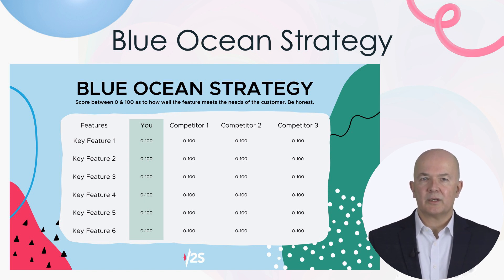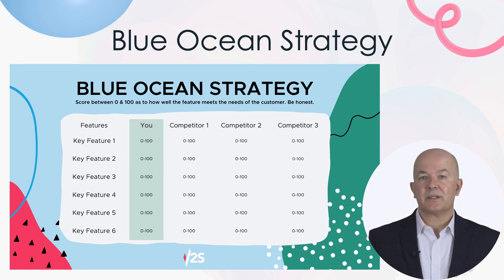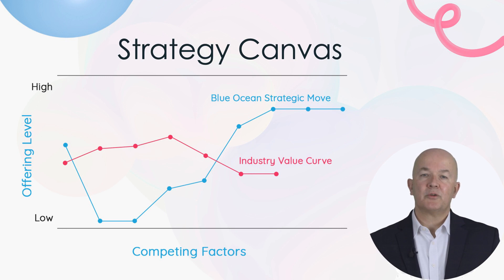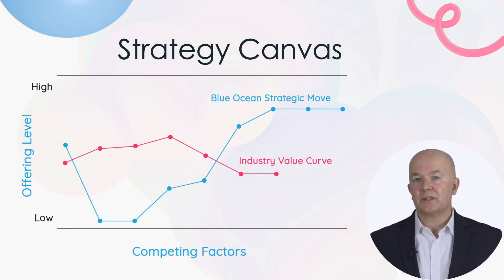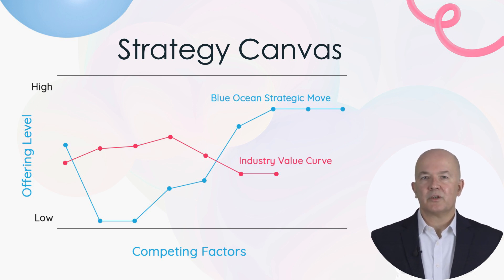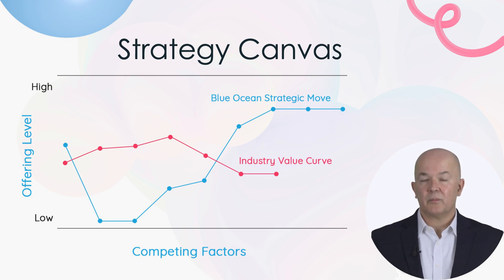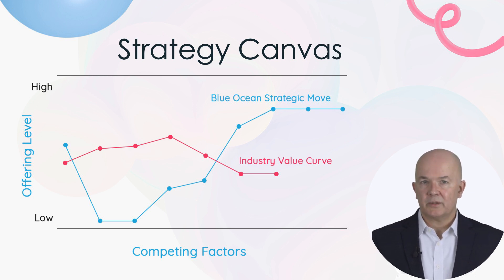This is where you can spot gaps in the market — where you ask yourself which factors can be raised, reduced, eliminated, and created. From that you can then create a strategy canvas. The strategy canvas is a way of displaying the numbers you have entered into the spreadsheet. It's a graphical representation designed to highlight where the differences are. Along the bottom of your strategy canvas, which is your x-axis, you have your competing factors. Your 0 to 100 score analysis goes up the side, which is the y-axis. Here you can plot the average score of your competitors on each feature as well as your own score, giving you two fundamental curves.